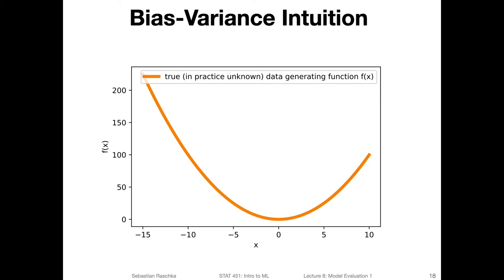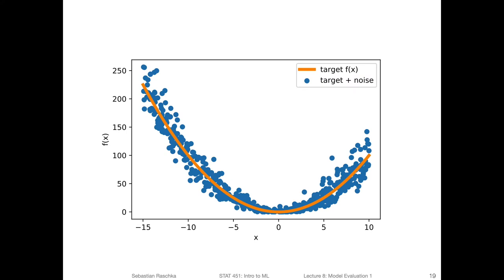To illustrate this, assume there is some true underlying data-generating function f(x) — think of it as a natural phenomenon that generates our data. In practice, there is usually also some noise. The blue dots represent real data points that can be observed, measured by some device. For instance, if the true underlying function is the temperature at some point, the blue points would be the actual measurements made with thermometers.